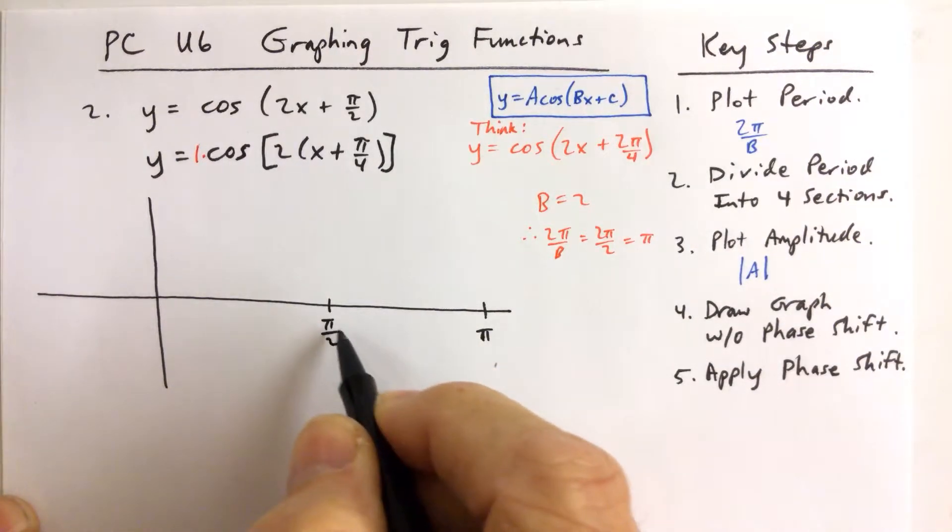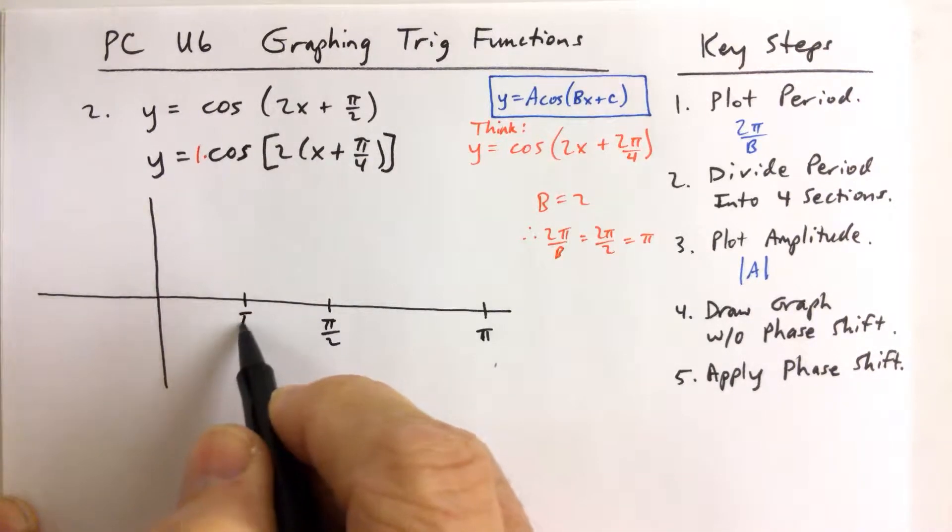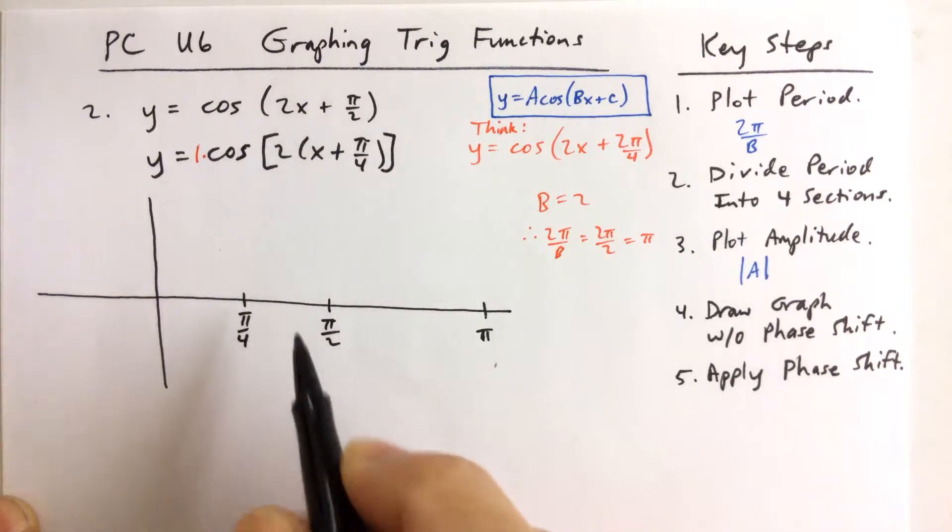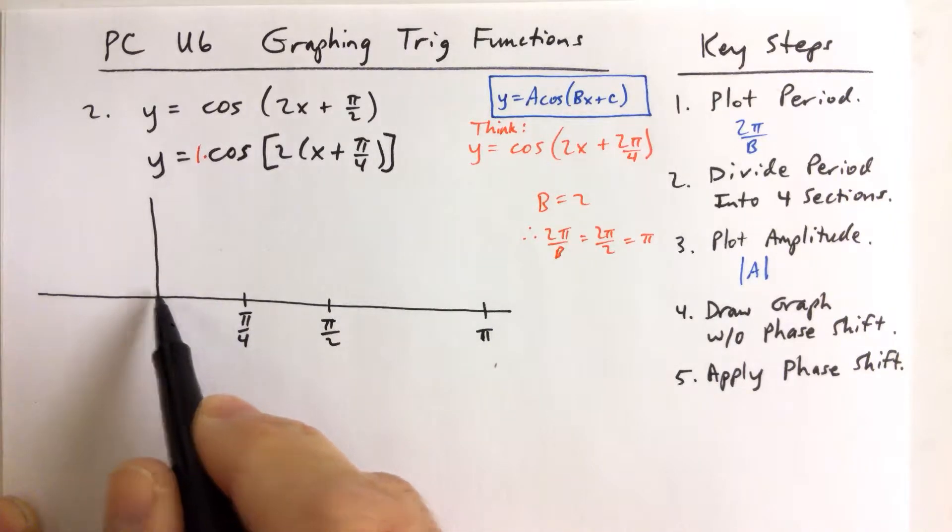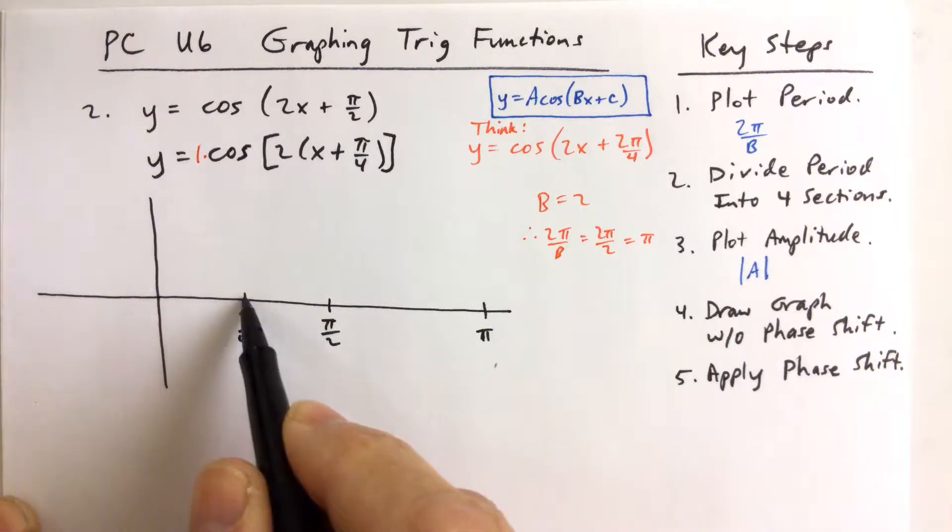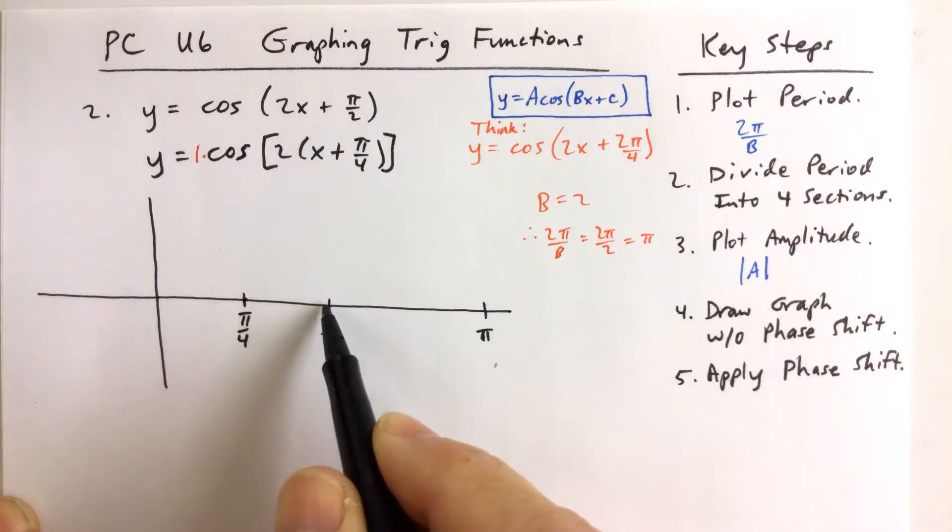And then divide the period into four sections means we cut that in half. Half of pi is pi over 2. Half of pi over 2 is pi over 4. And then knowing that from the zero to the first tick mark is pi over 4 radians, that means that from any tick mark to the next is pi over 4 radians.